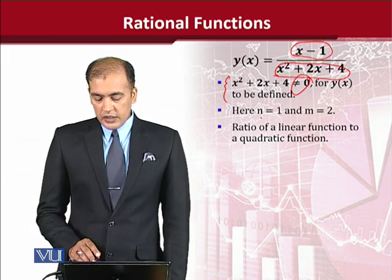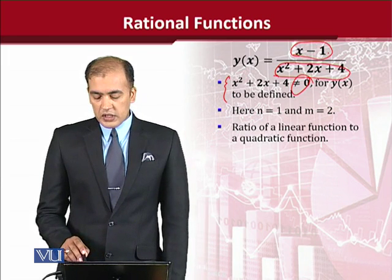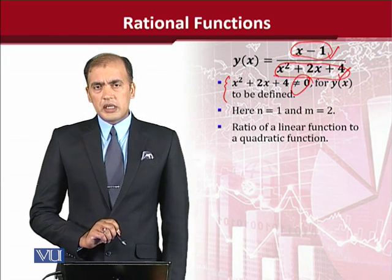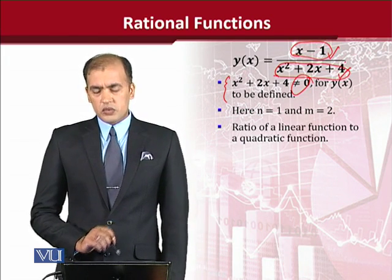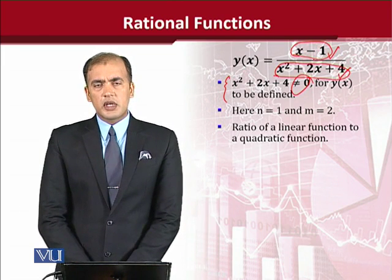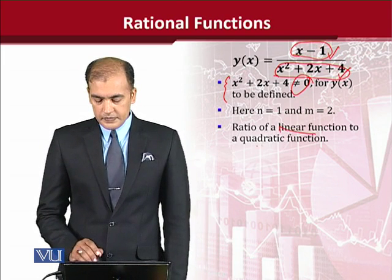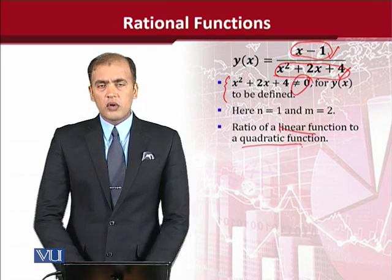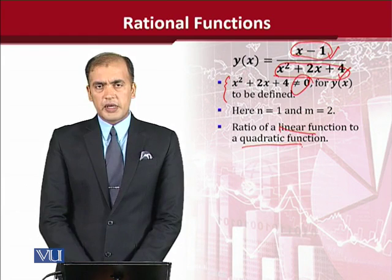Now, here the degree of the equation in the numerator is 1 and the degree of the equation in the denominator is 2. So we can say it is the ratio of a linear function and a quadratic function. This is how the rational functions can be made.